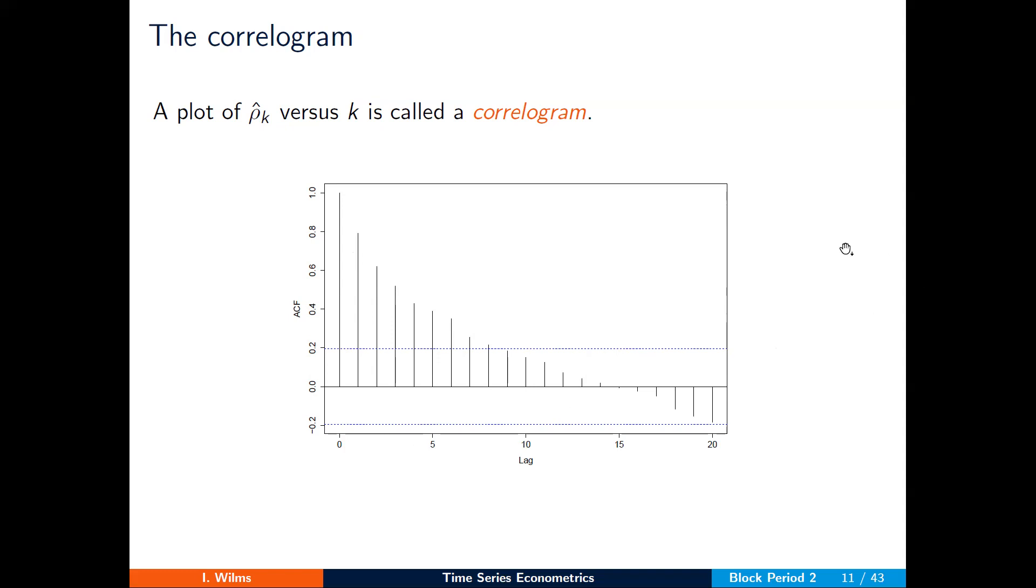We typically see a pattern of decaying autocorrelations, since the correlations between today and yesterday are typically larger than between today and, let's say, 20 days ago.